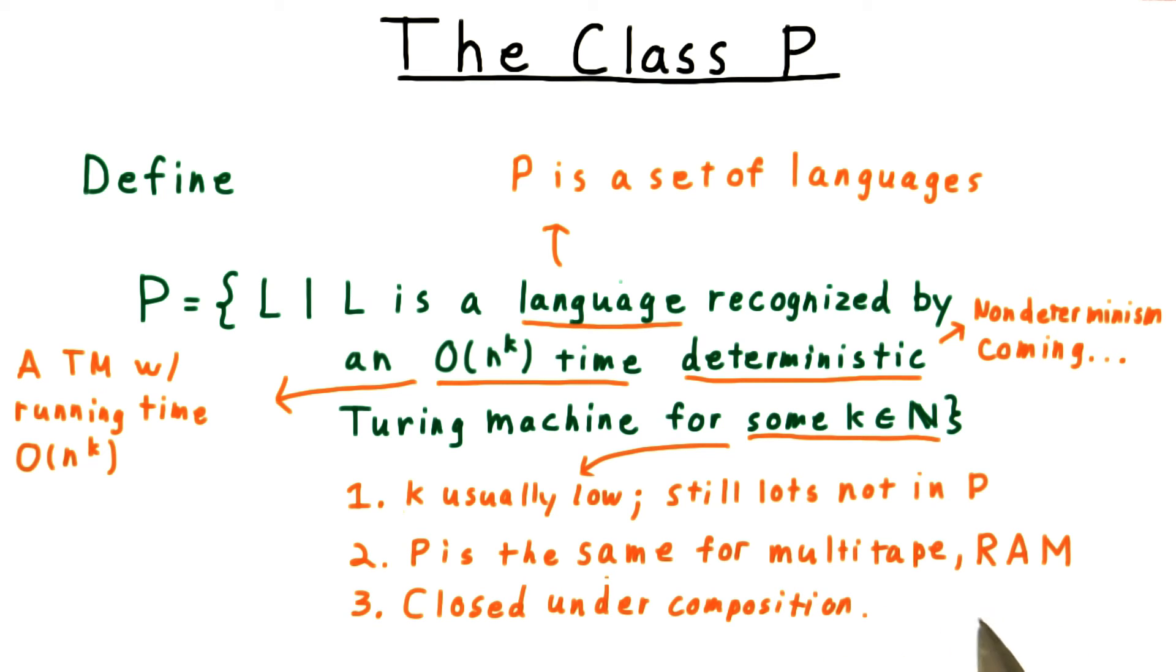Lastly, P has a nice property of closure under the composition of algorithms. If one algorithm calls another algorithm as a subroutine a polynomial number of times, then that algorithm is still polynomial, and the problem it solves is in P.